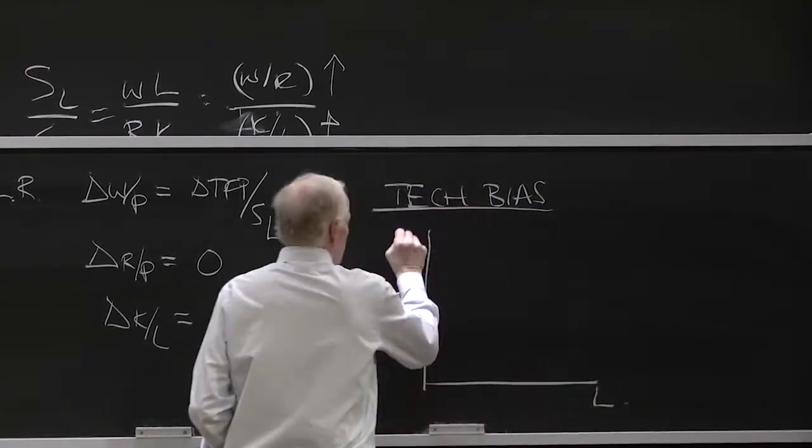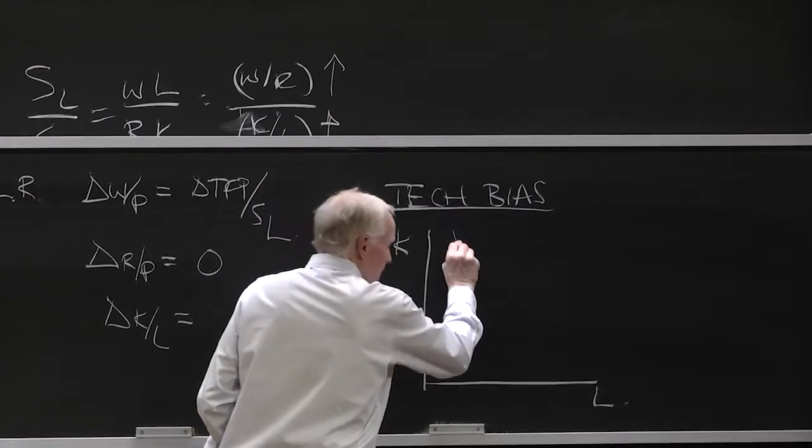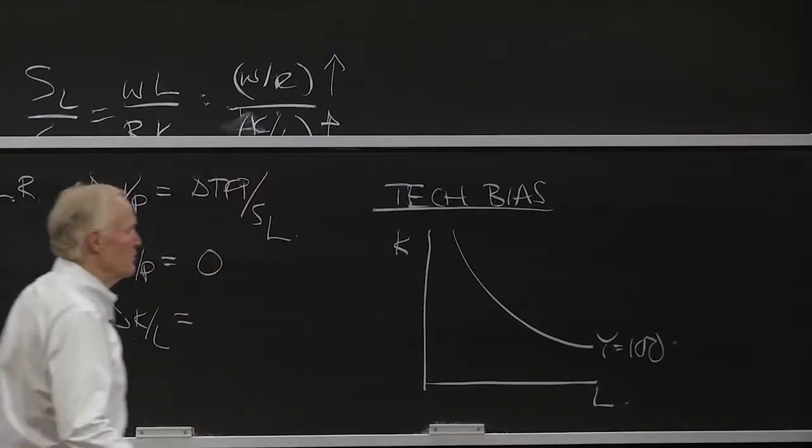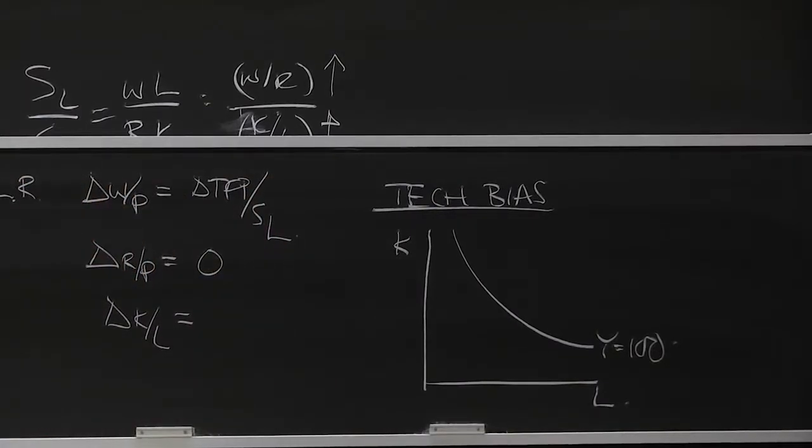Think about it in terms of labor and capital. Here's L. Here's K. Here's the Y equals 100 isoquant. That's the Y equals 100 isoquant. What is technical progress?